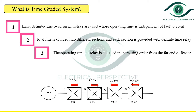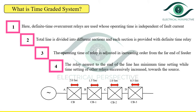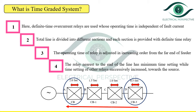To achieve the objective that the smallest possible part of the system is isolated in case of fault, the operating time of the relay is adjusted in increasing order from the far end of the feeder. The relay nearest to the end of the line has the minimum time setting, while the time setting of each relay successively increases towards the source. As seen in the figure, the relay nearer to the load end has the minimum time setting of 0.5 seconds, increasing to a maximum of 2 seconds near the source end.